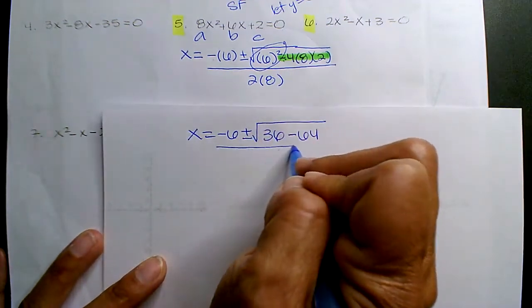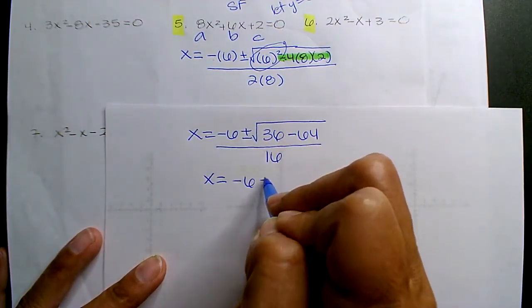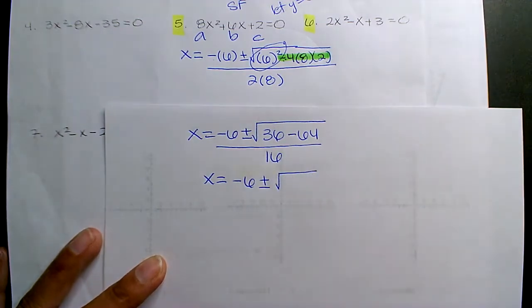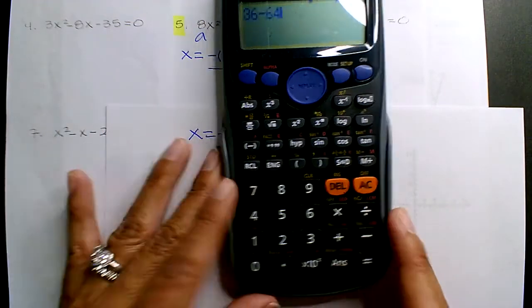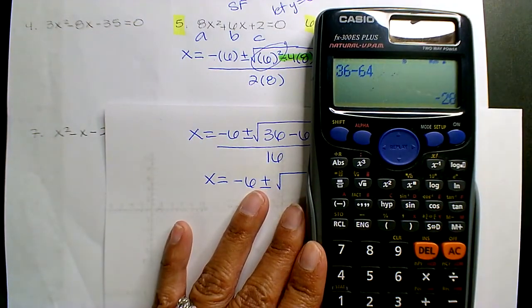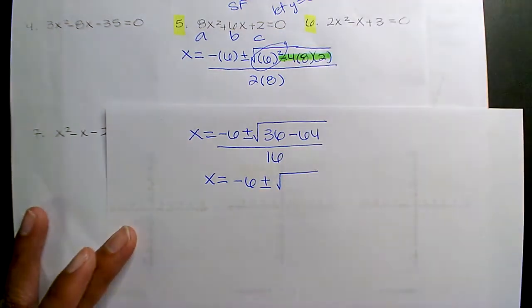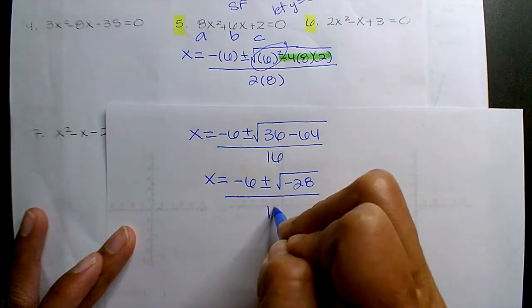That's where you can see your negative is coming from. Over 16. Minus 6 plus or minus, what is 36 minus 64? Negative 28. Negative 28 over 16.